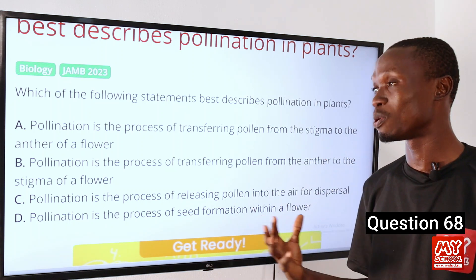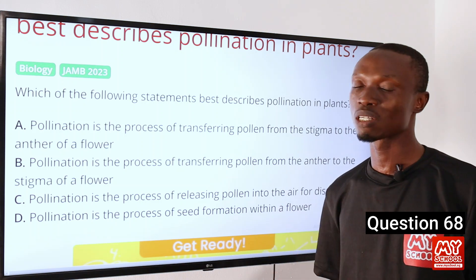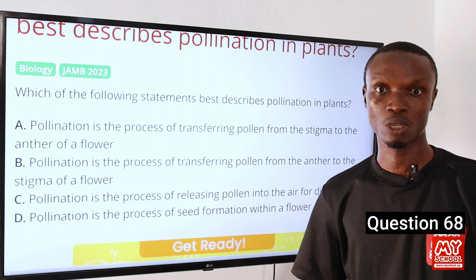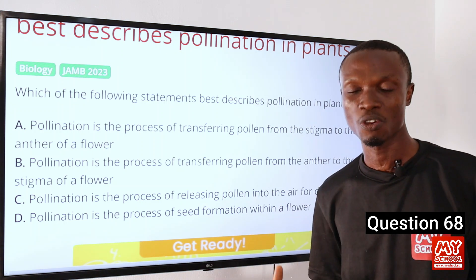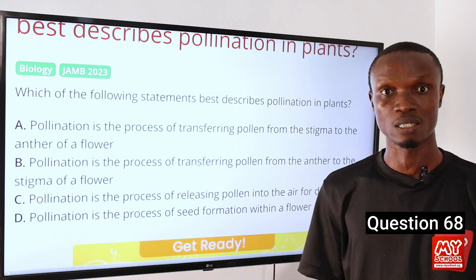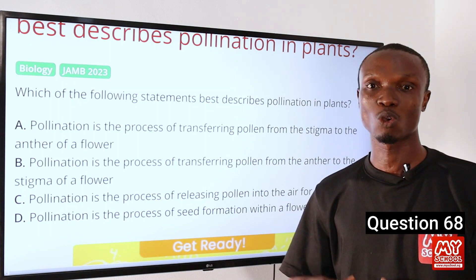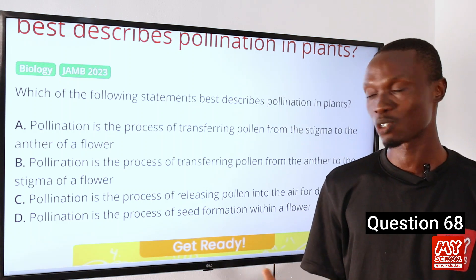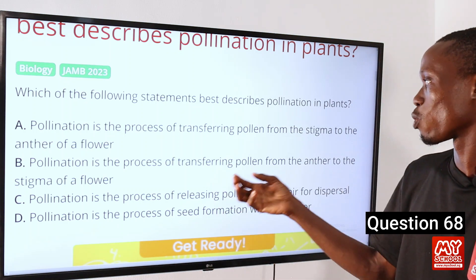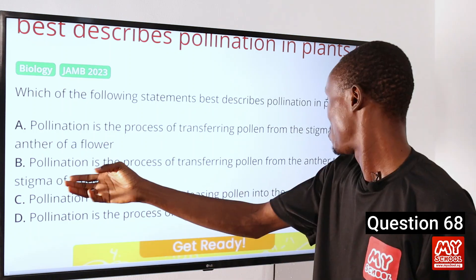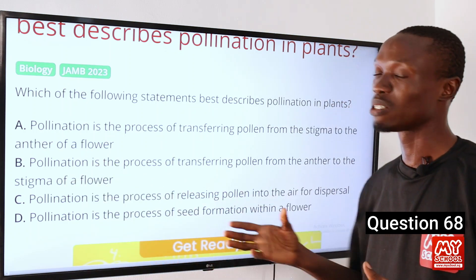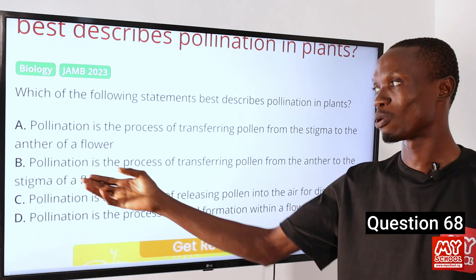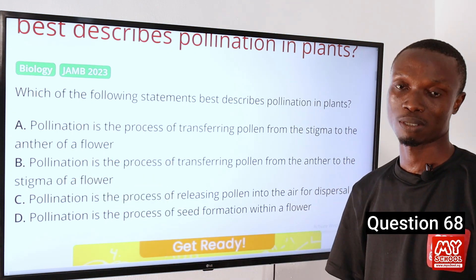It should also be noted that pollination can be self or cross. When it's self, it occurs within a particular plant; when it's cross, it occurs between two plants. So option B correctly defines pollination and becomes the correct answer.